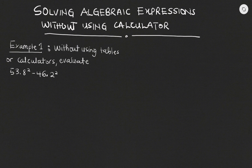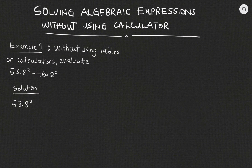So we have example number one. Without using tables or calculators, we are to evaluate 53.8 squared minus 46.2 squared. So this is very easy. Let's go ahead and look at the solution to this problem. The expression we've been given is 53.8 squared minus 46.2 squared. Now this expression, where we have a number squared minus another number squared, is what we call difference of two squares.